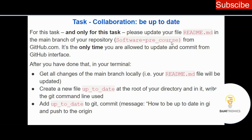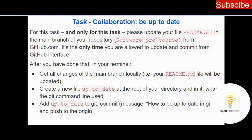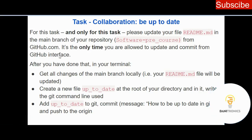We started from the first task Coding Fury Roads, then Collaboration Be Up To Date, and in all this we created a repository called Software Pre-Course. Now we're saying that the readme file we created in Software Pre-Course — we should go there and only for this task, update your readme file in the main branch of your repository from github.com. It is the only time you are allowed to update and commit your file from the GitHub interface.